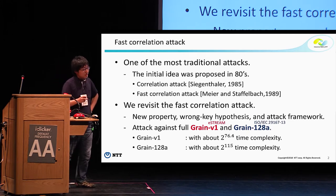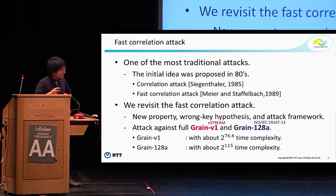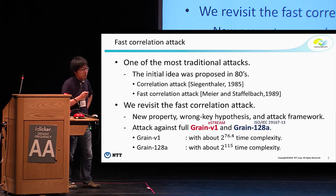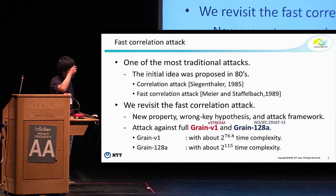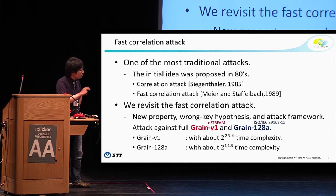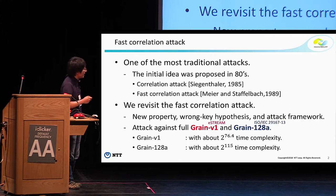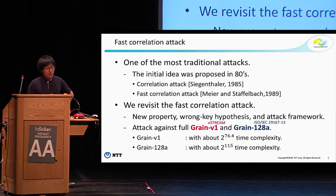Our new idea is very powerful when there are many linear approximate representations. In other words, our attack is the so-called multiple linear fast correlation attack. We applied this technique to the modern stream cipher grain family — specifically grain v1 and grain 128a. Grain v1 was part of the eSTREAM portfolio, and grain 128a was standardized by ISO/IEC. Our new attack framework can break them all faster than exhaustive search.